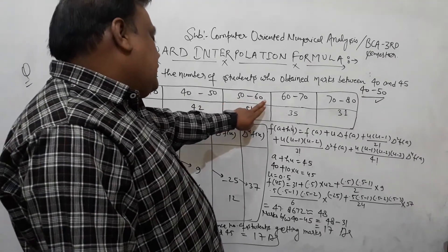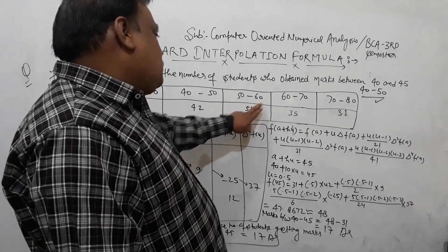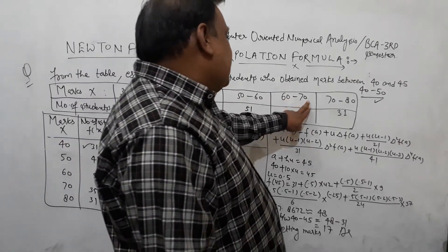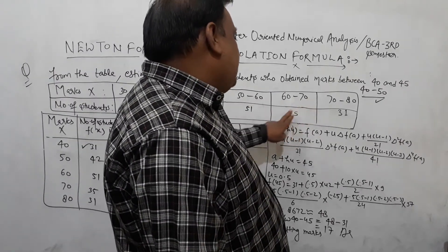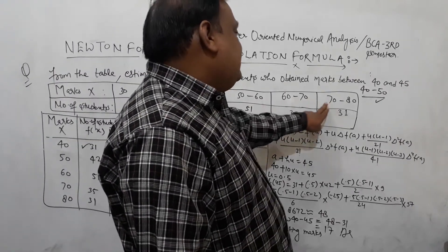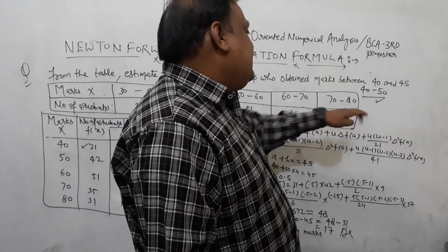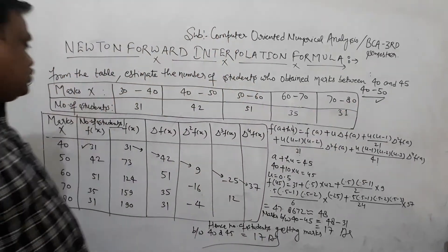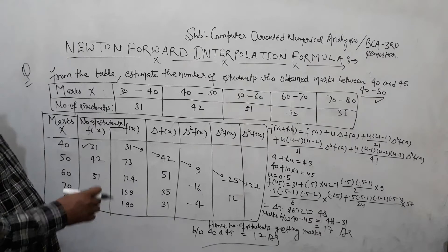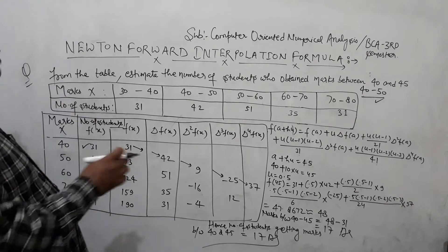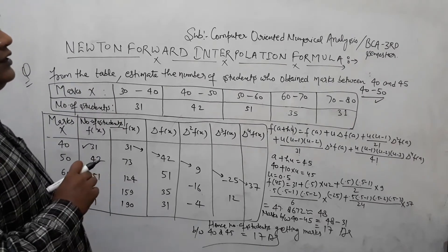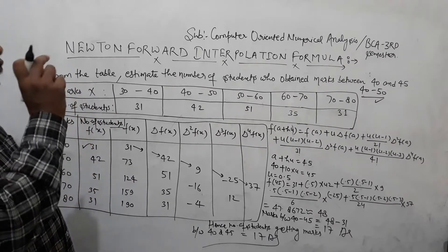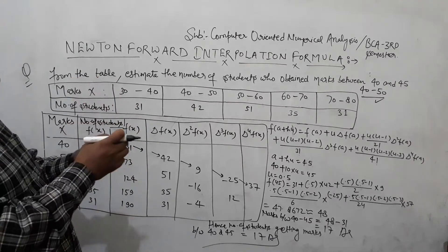From the table: 50-60 marks are obtained by 42 students, 60-70 marks by 51 students, 70-80 marks by 35 students, and 80-90 marks by 31 students. We need to find the number of students who obtained marks between 40 and 45.